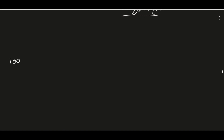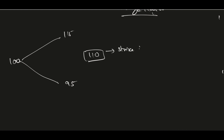Let's understand this with an example. At the moment the stock price is 100. In three months' time, the stock can either go to 115 or 95. The strike price of the call option is 110. After three months, if the spot price is 115, the option price will be valued at 5, and if the stock price is 95, the option price will be valued at 0 — so either 5 or 0.